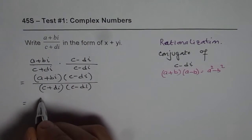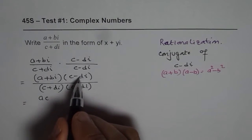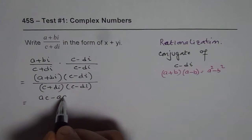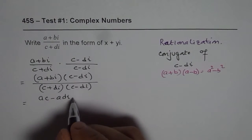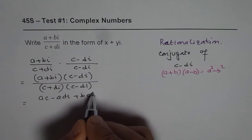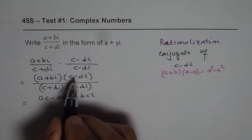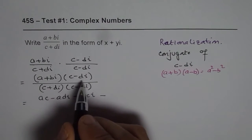So a times c is ac. A times di with minus sign gives us minus adi. Now with bi, if I multiply, I get bci. When I multiply plus with minus, I get minus and bdi square.